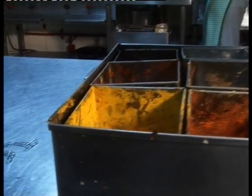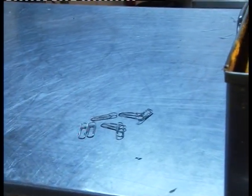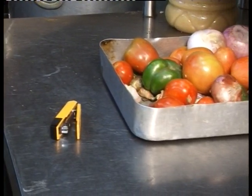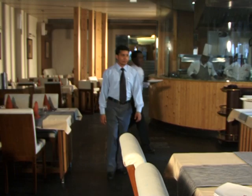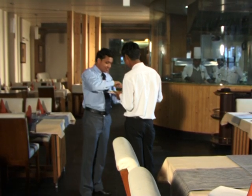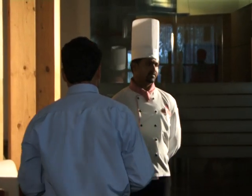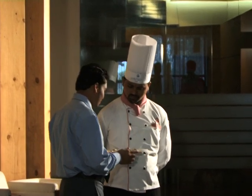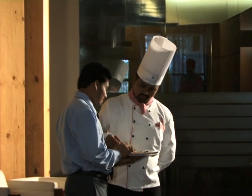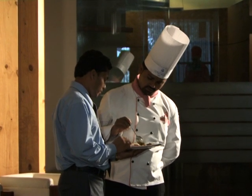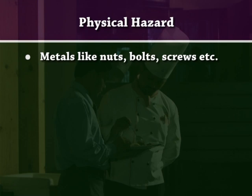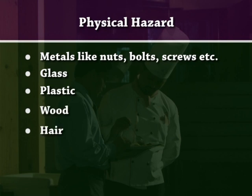Let's start with physical hazards. Physical hazards are solid pieces of foreign objects that are not supposed to be in food. Physical objects can come into contact with food and make it unsafe. Examples of physical hazards include metals like nuts, bolts and screws, as well as glass, plastic, wood, hair and insects.